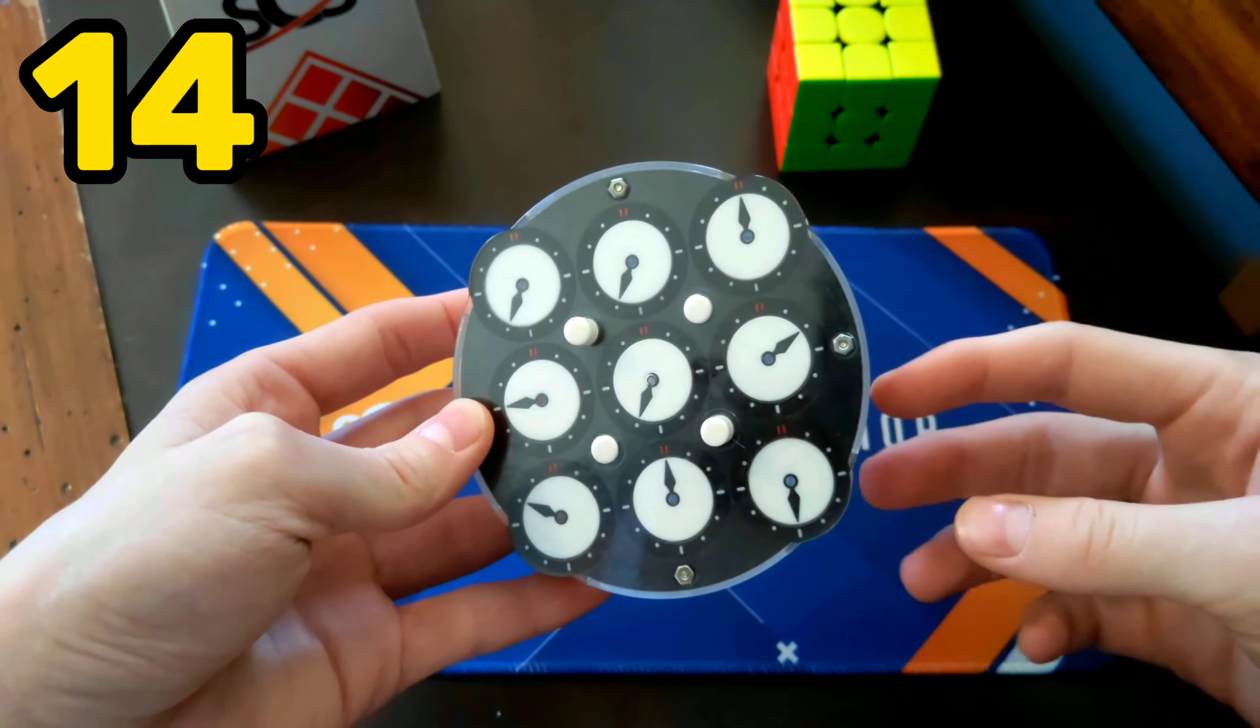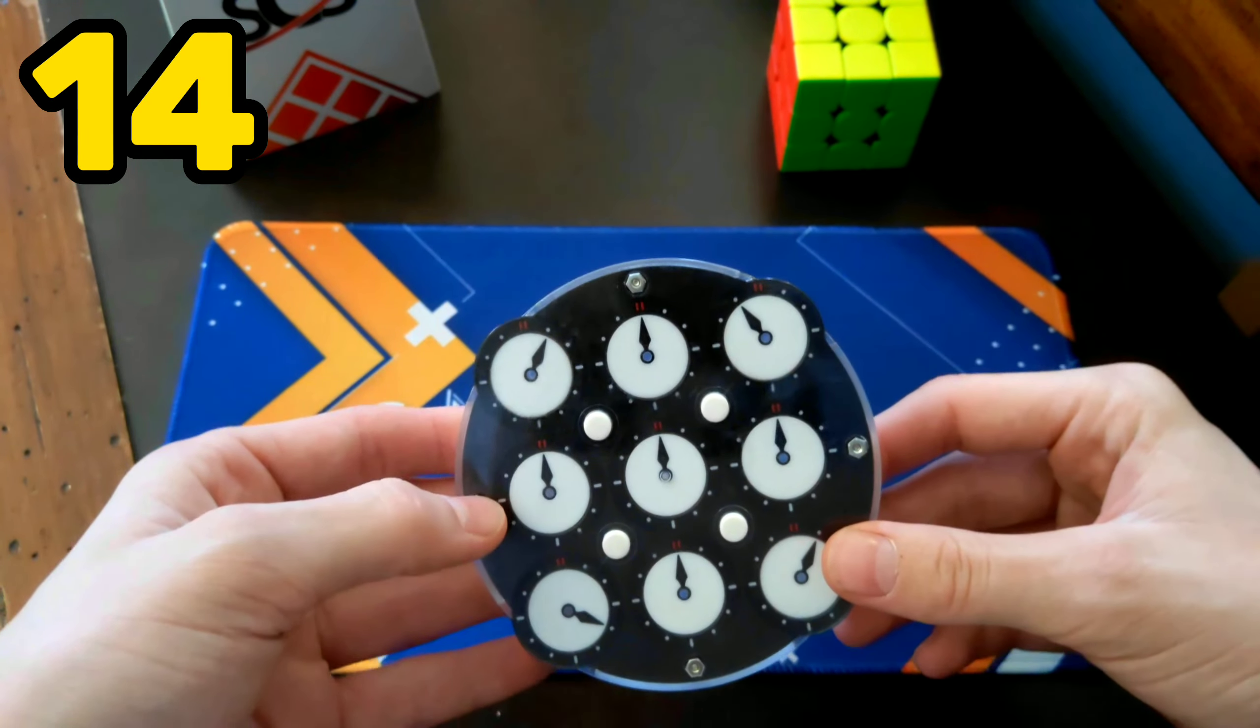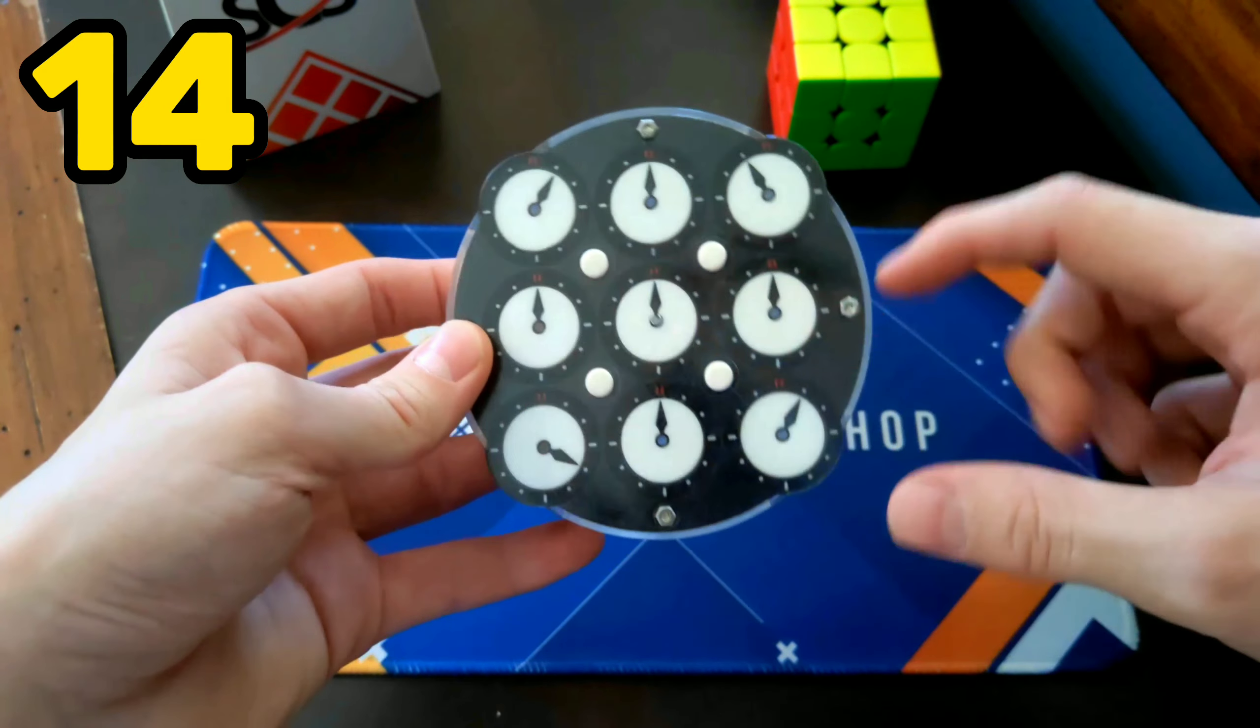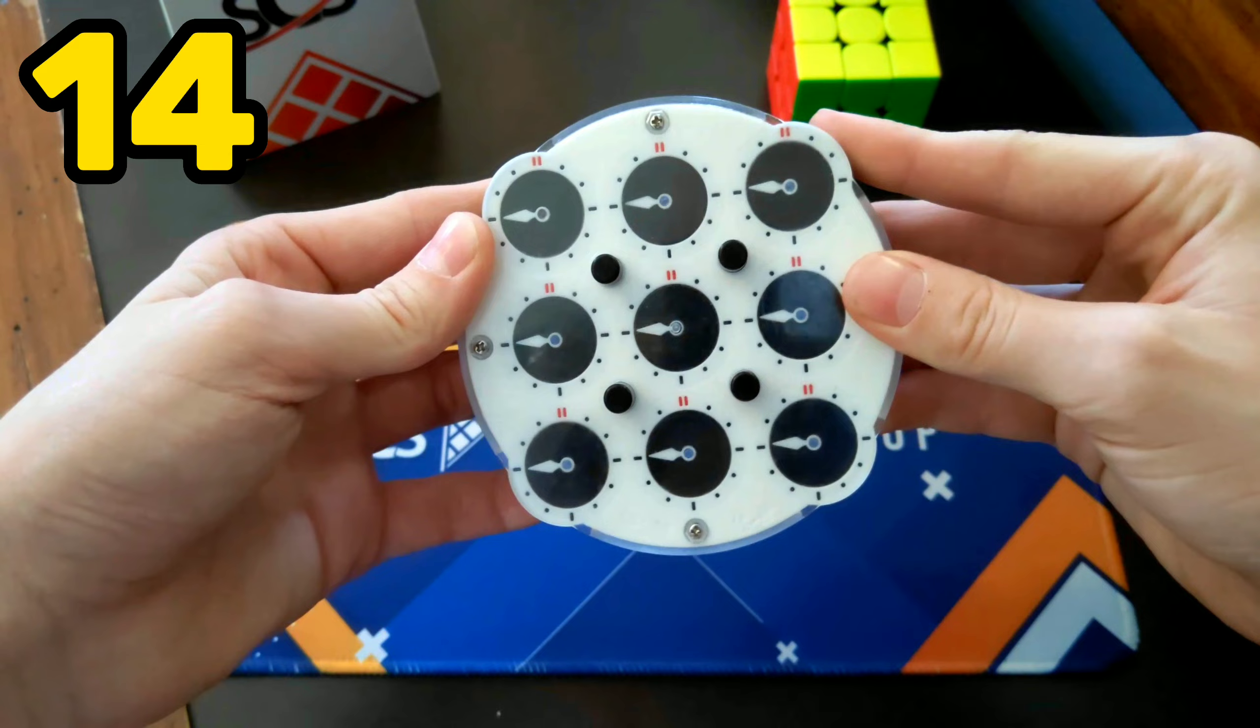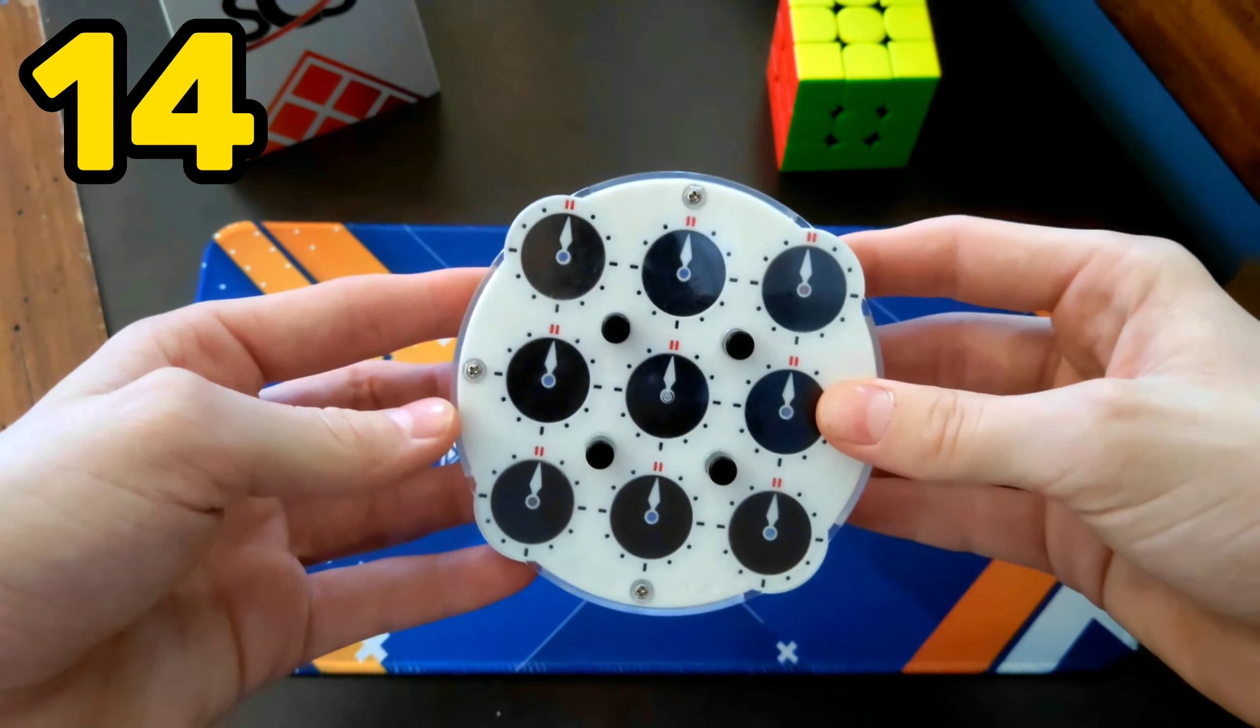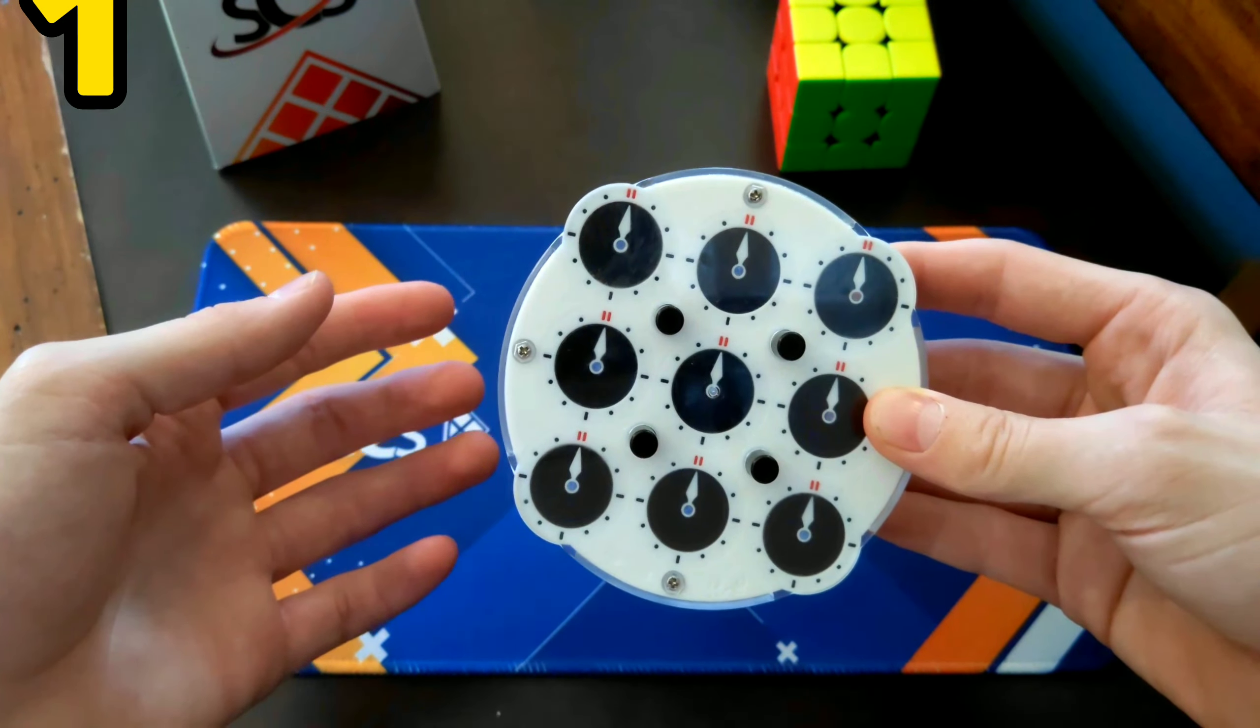I bet you're able to solve the clock. The first step is to solve a cross on both sides. Then you finish it by solving the corners. In fact, it's so easy, you don't even need to watch a tutorial.